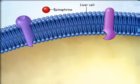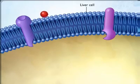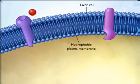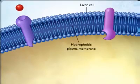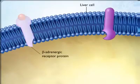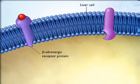Epinephrine is one of many hormones that is water-soluble and hydrophilic, and therefore unable to cross the hydrophobic plasma membranes of its target cells. Instead, it binds to receptor proteins located in the plasma membrane and does not enter the cell.